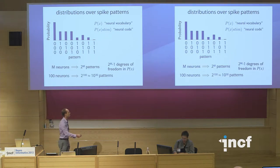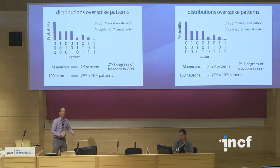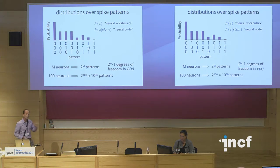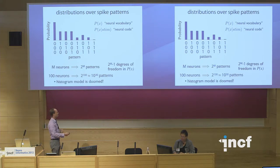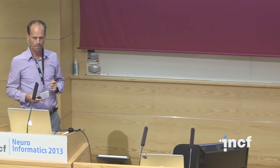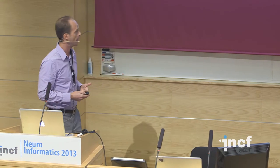The problem is that if I have m neurons recorded simultaneously, there are two to the m patterns, and two to the m minus one degrees of freedom in p of x. If I get to large populations — say 100 neurons — I'm now talking two to the 100th possible patterns, which is larger than 10 to the 30th. In the history of the universe, even if patterns were observed every millisecond, you'd never get enough data to observe even one of every pattern. This histogram-based approach simply won't work.